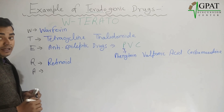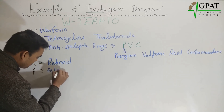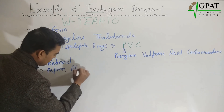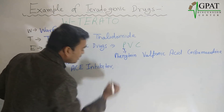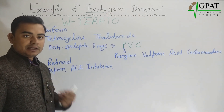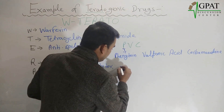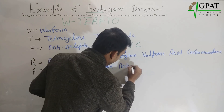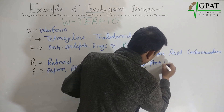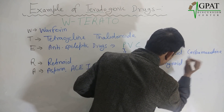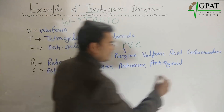Next, A — many drugs come from the letter A. The examples are: aspirin, ACE inhibitors — meaning all the drugs of the -pril class such as captopril, lisinopril, enalapril, all the ACE inhibitors — anti-cancer drugs, antithyroid drugs, and androgens.